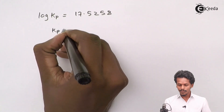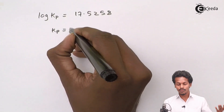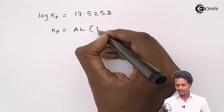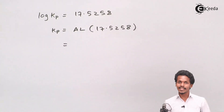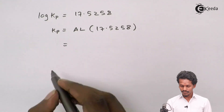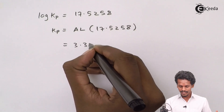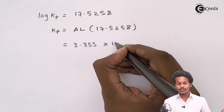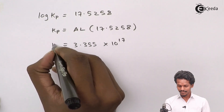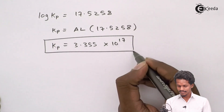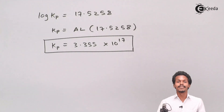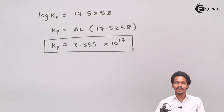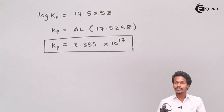Since log Kp = 17.5258, to calculate Kp we take the antilog. The antilog of 17.5258 gives us Kp = 3.355 × 10¹⁷. This is the value of Kp, the equilibrium constant in terms of pressure.